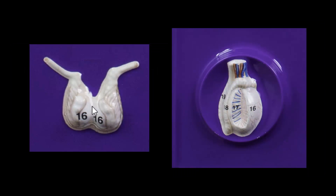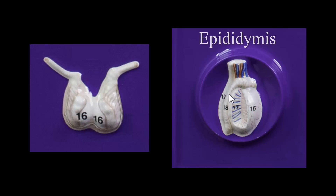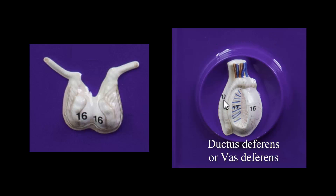Here's the male reproductive organ, the testis. Number 17 here is the seminiferous tubules, where sperm is maturing and being produced. We are also going to have a certain type of cell that is going to produce testosterone — that will be covered in lecture. Number 18 is the epididymis, and then number 19 is going to be the ductus deferens, also called the vas deferens. And I hope this helps.